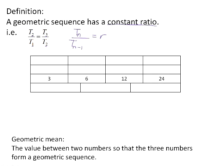Let's have a look at the sequence given as an example: 3, 6, 12, 24. 3 is the first term, 6 is the second term, 12 is the third term, and 24 is the fourth term. If we divide term 2 by term 1, we get a value of 2. If we divide term 3 by term 2, we get a value of 2. And if we divide term 4 by term 3, we get a value of 2. Therefore, this is a geometric sequence with a constant ratio of 2.